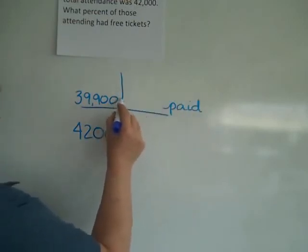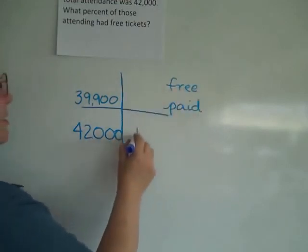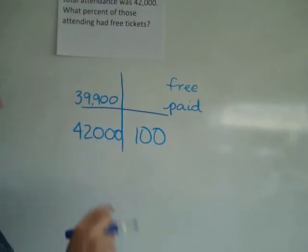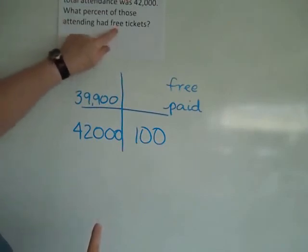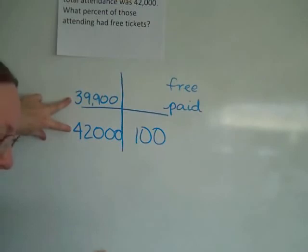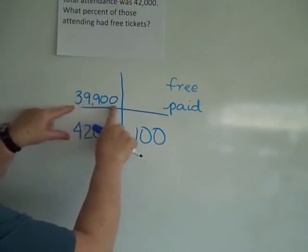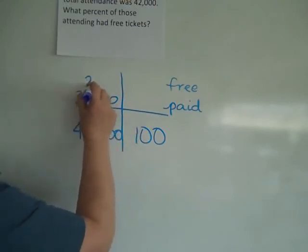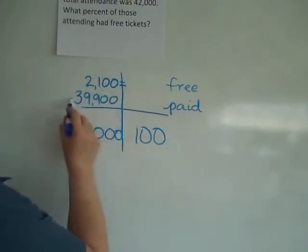The other part we would look at is those that got in free. This, of course, is your 100. We want to know who had free tickets, so first I need to find that number by subtracting. 42,000 minus 39,900 is 2,100. Those are the free ones and those are the ones I'm looking for.